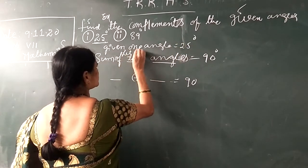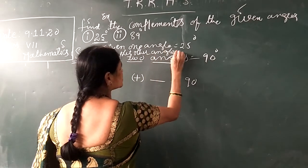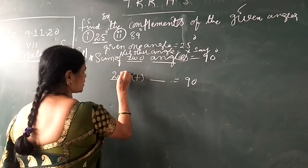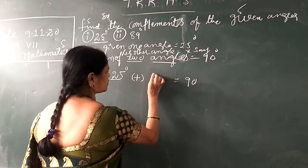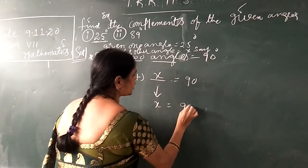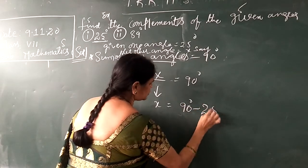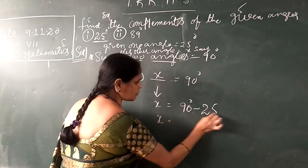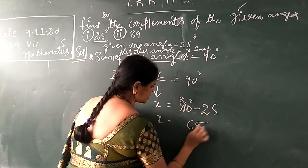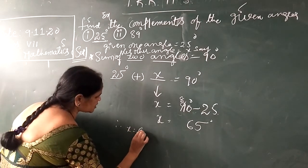Let the other angle be equal to x. So one angle is 25 degrees. The other angle, which is not given, you write as x. So 25 plus x is equal to 90 degrees. If you transpose it: x is equal to 90 minus 25 degrees. So 10 minus 5 is 5, and 8 minus 2 is 6. Therefore, x is equal to 65 degrees.